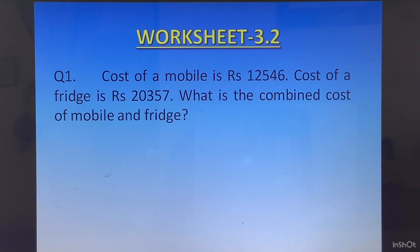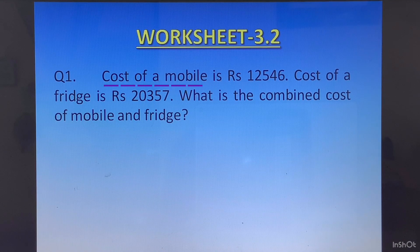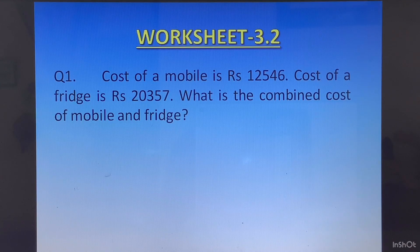Question 1: The cost of a mobile is rupees 12546 and the cost of a fridge is rupees 20357. What is the combined cost of the mobile and fridge? You will write the statements as cost of a mobile, cost of a fridge, and then the total cost or combined cost. Add and report the answer as rupees so-and-so.